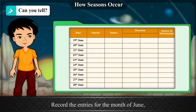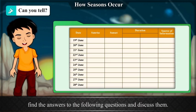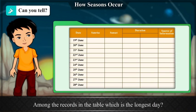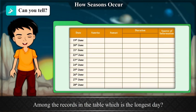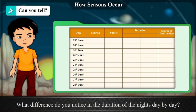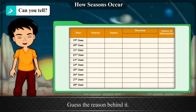Record the entries for the month of June, find the answers to the following questions, and discuss them. Among the records in the table, which is the longest day? What difference do you notice in the duration of the nights day by day? Guess the reasons behind it.